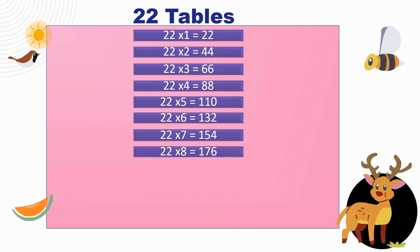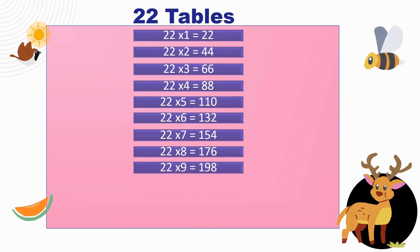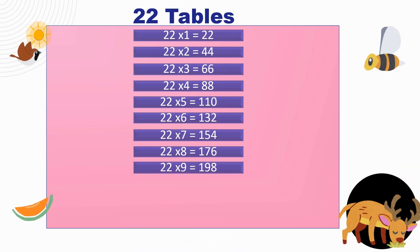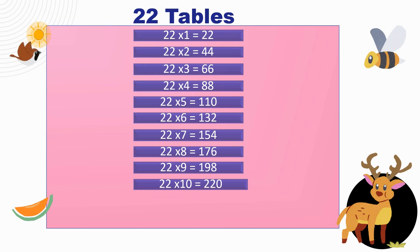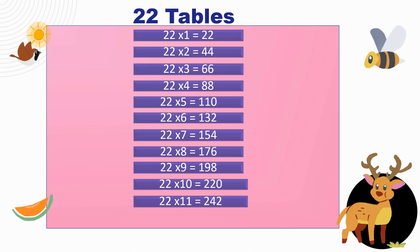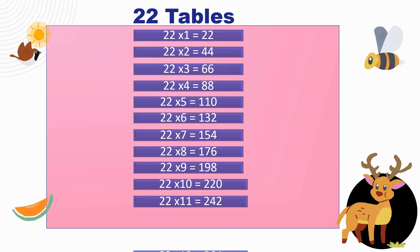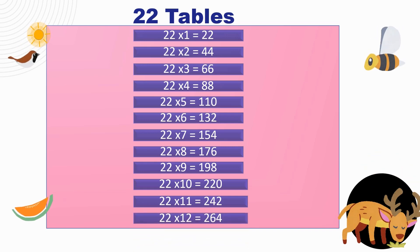22 times 3 is 66, mathematical patterns with number mix. 22 times 4 is 88, with every line you're doing great. 22 times 5 is 110, feel the rhythm again and again. 22 times 6 is 132, sailing smoothly like a canoe.